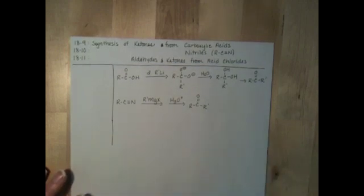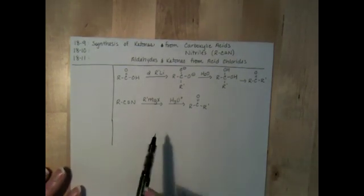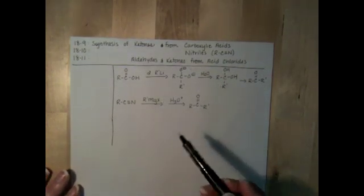And that's synthesis of a ketone from a nitrile. Well, the last set of reactions we're going to look at are aldehydes and ketones from acid chlorides.